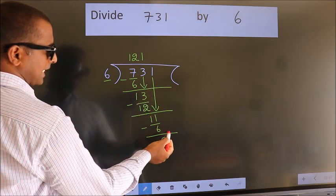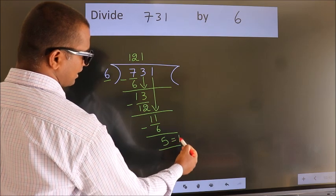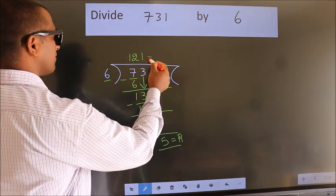No more numbers to bring it down. So we stop here. This is our remainder. This is our quotient.